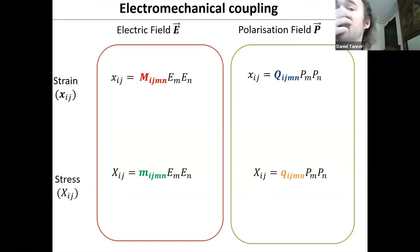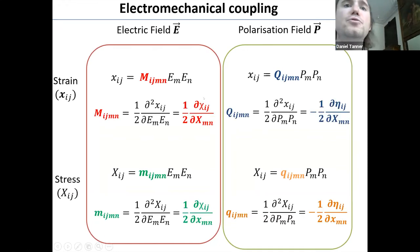So as we've seen, there are other electrostrictive tensors introduced earlier. And using different free energies, we can get similar relations for all of them, which all involve derivatives of either the susceptibility or the inverse susceptibility with respect to stress or strain.